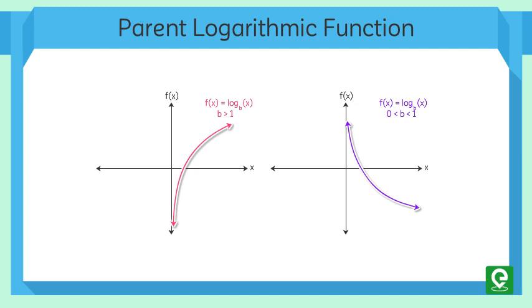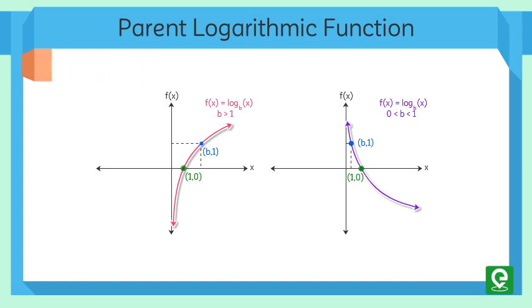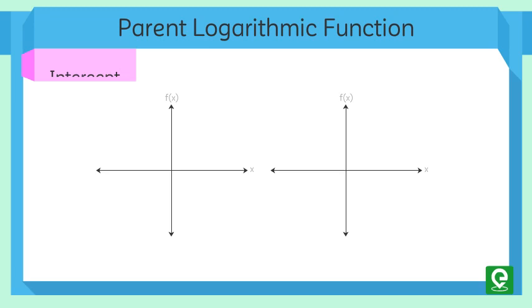It is a one-to-one function, meaning every value of X gives a distinct and unique value of Y. The domain of the function varies from 0 to infinity, and the range varies from negative infinity to positive infinity.